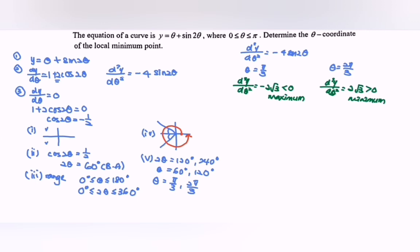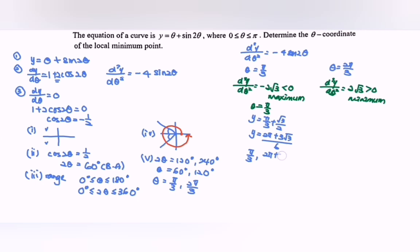So θ = π/3 is the maximum and θ = 2π/3 is the minimum. To find the value of y: if θ = π/3, substituting into the equation gives y equal to π/3 plus √3 over 2. Equating the denominator, y equals 2π plus 3√3 over 6, giving the maximum point (π/3, (2π + 3√3)/6).